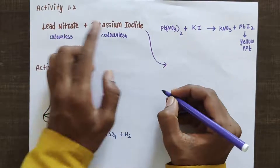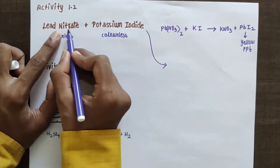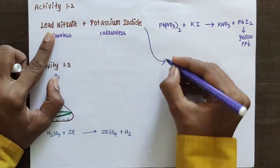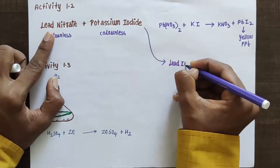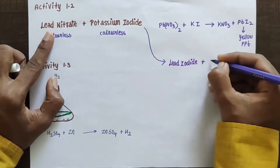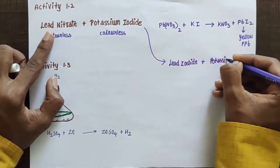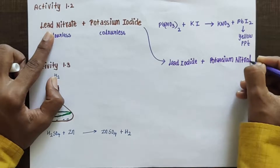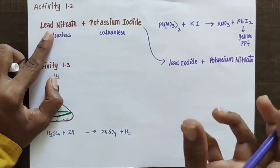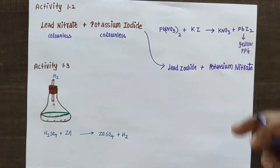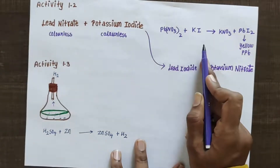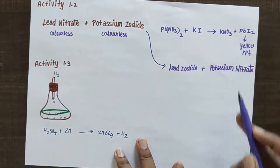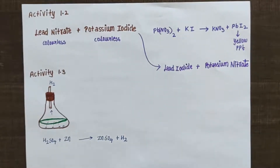You will get lead iodide and potassium nitrate. The equation is: Pb(NO₃)₂ + 2KI → 2KNO₃ + PbI₂. This is your lead iodide, which is going to give that yellow color precipitate. Am I right, friends?